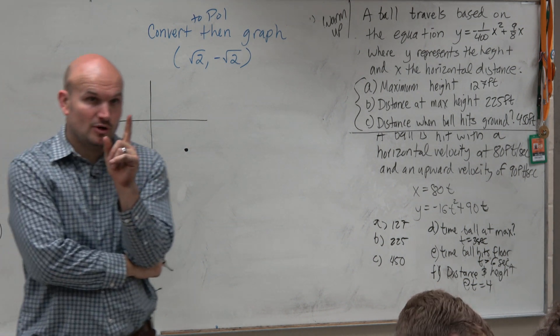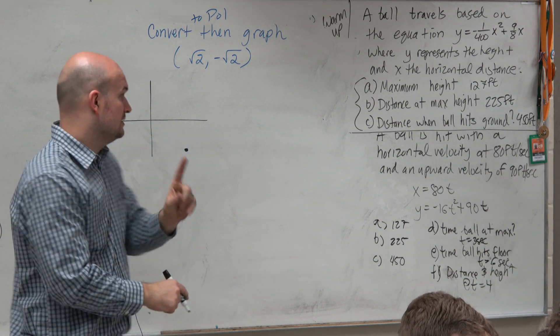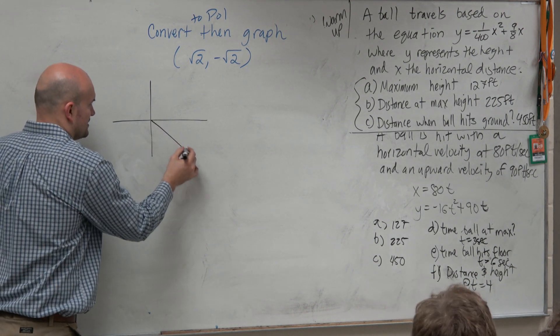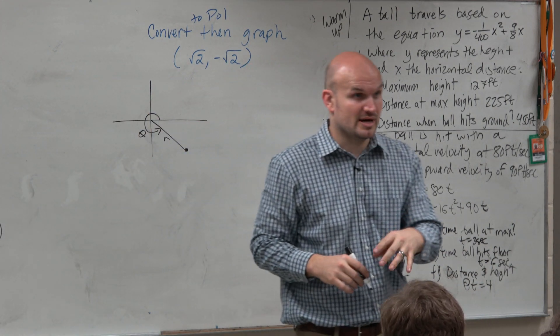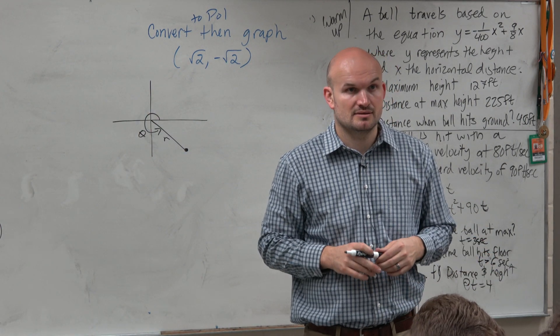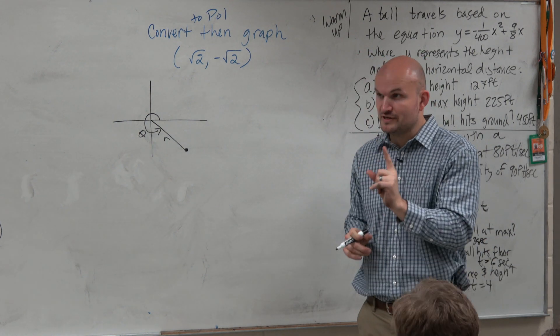Now remember, to convert this to polar form, I need to figure out r and I need to figure out theta. We've got to understand what theta is. Here's r, there's theta in standard form, right? Positive theta, at least. Does that make sense? That's what we've got to figure out. Now, do we have enough information to figure that out?